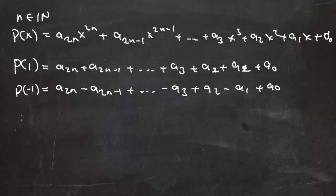Öncelikle şurayı bir düzeltelim: a₂ - a₁ + a₀. Şimdi bu durumda eğer biz bu iki ifadeyi toplarsak P(1) + P(-1)'e bakacak olursak burada a₂ₙ₋₁'ler, a₃, a₁ gibi terimler yani tek terimler gidecek.